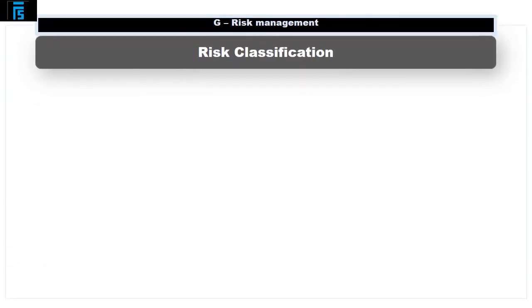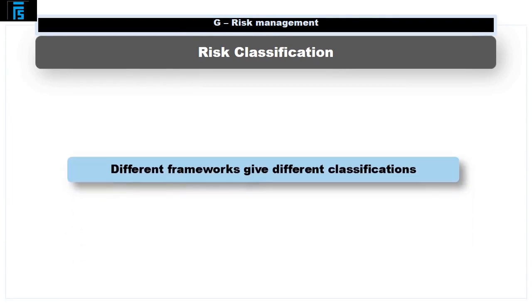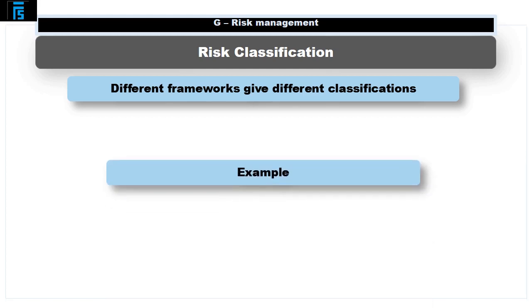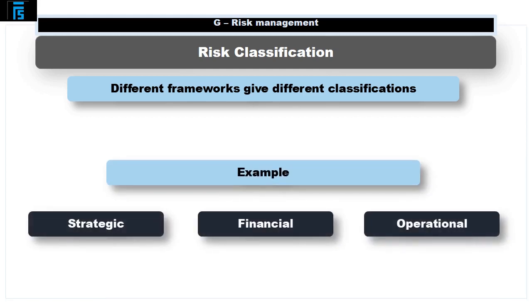Risk comes in various different guises and many frameworks are available to distinguish between different types of risk that a company may face. Simpler frameworks may consider, for example, strategic, financial and operational risk, while other frameworks can become much more complex. There are also frameworks to assist an organisation with managing the risks they identify; however, this is a topic that is examinable elsewhere.